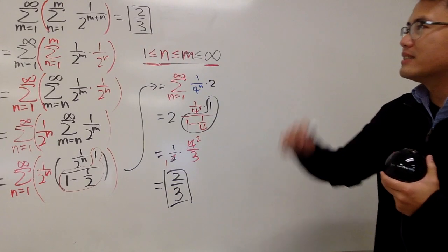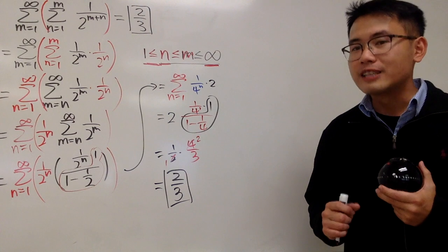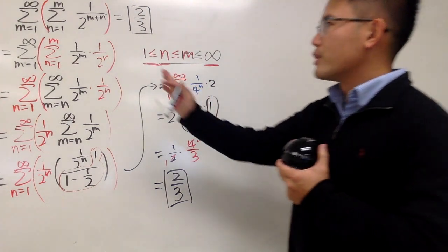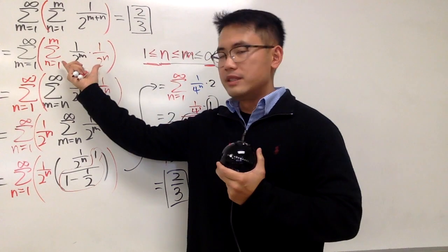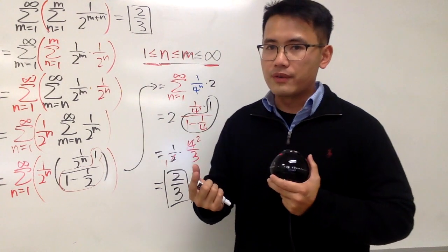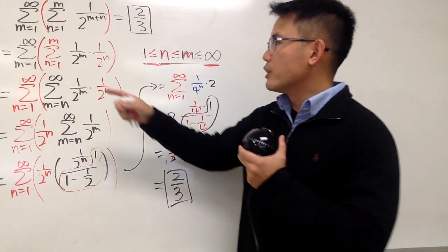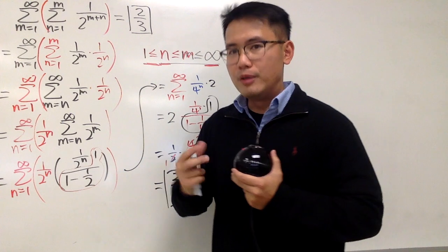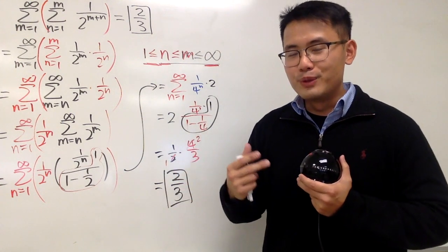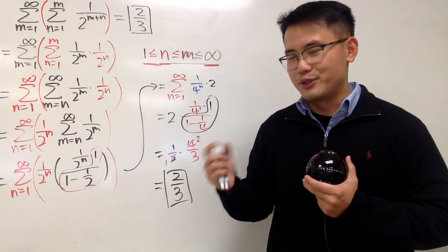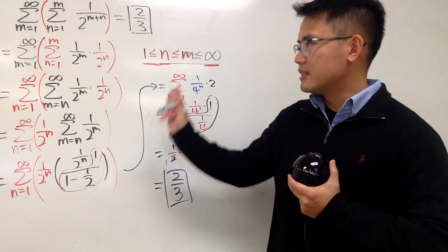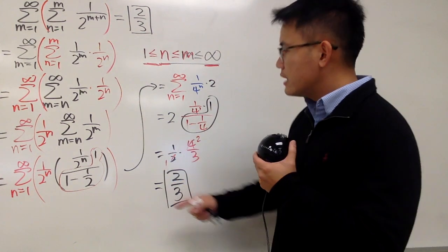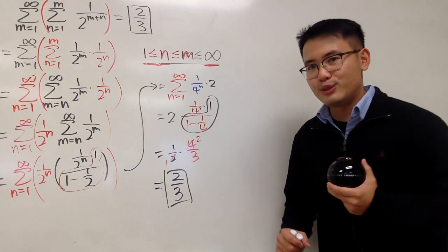So this is how you can compute a double summation in a nice way by changing the order. If you really want to work it inside out, do it carefully — especially when you have n goes from 1 to m, be sure to use the finite version of the geometric series formula. It's still possible, but the expression won't be as nice.